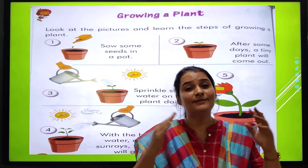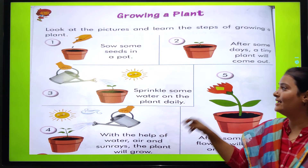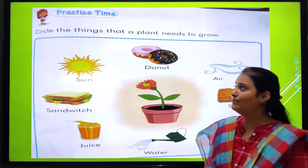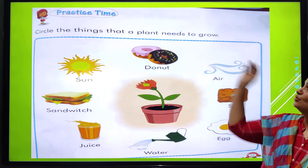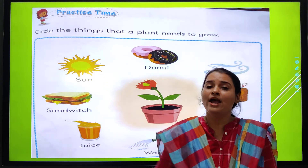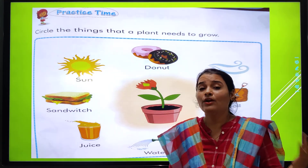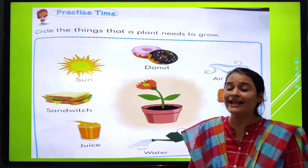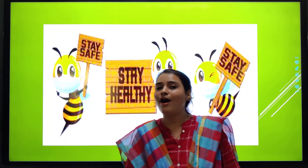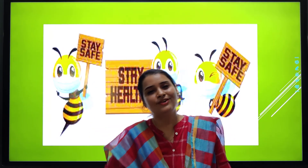Understood, my dear students? So what we did today — there is also one exercise in our general awareness course. Some things that a flower needs to grow are shown — like donuts, sandwich, sun — which things does a plant need to grow? This exercise you will do by yourself. Keep remember all these things. Now we will meet in our next class. Till then, bye bye everyone. God bless you all.